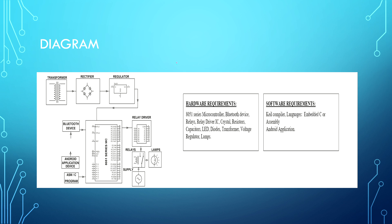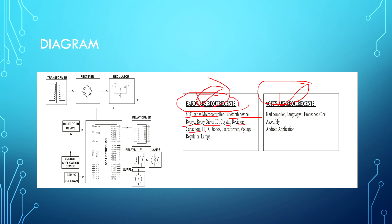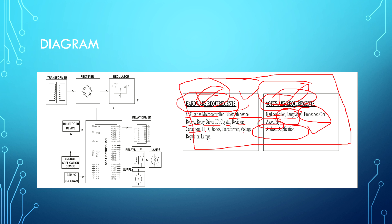Let me cover the hardware and software requirements needed for debugging and execution. Hardware includes: 8051 serial microcontroller, Bluetooth device, relay, relay drivers, crystal, resistors, capacitors, LED diodes, transformer, voltage regulator, and lamps. Software requirements include Embedded C or Assembly language, and an Android application for execution and debugging of the project.